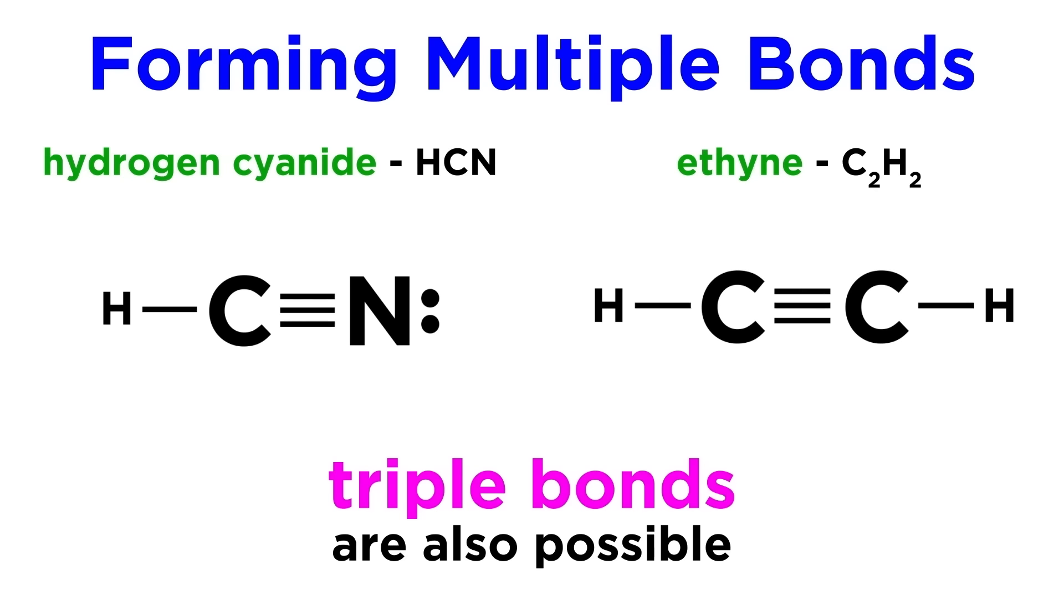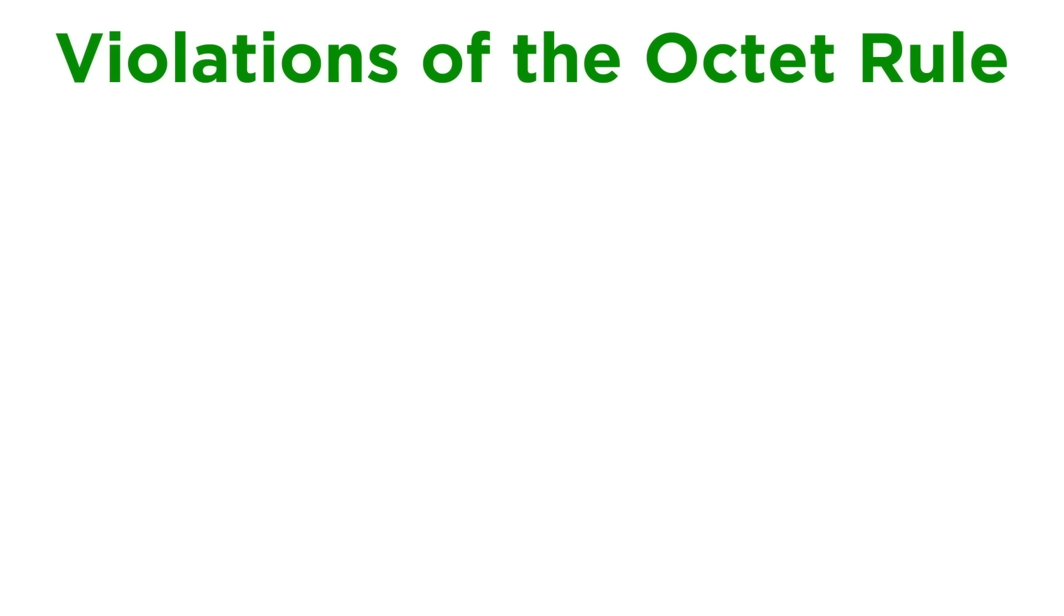We can also have triple bonds, such as with these molecules. As we mentioned, there are many situations in which the octet rule is not followed. There are some electron deficient molecules that lack an octet for the central atom. Elements like boron and aluminum only have three valence electrons, so they can only make three covalent bonds.